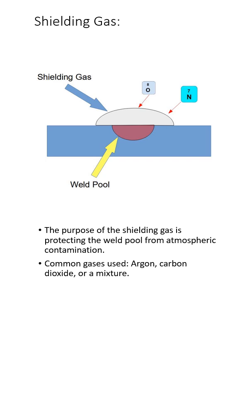So we need a shielding gas. The common gases that we use are argon, carbon dioxide, helium, or some kind of mixture of the aforementioned gases. And sometimes we'll throw in oxygen or nitrogen in there for some specific reason. But for the most part, we use argon and carbon dioxide as shielding gases to protect our weld puddle.